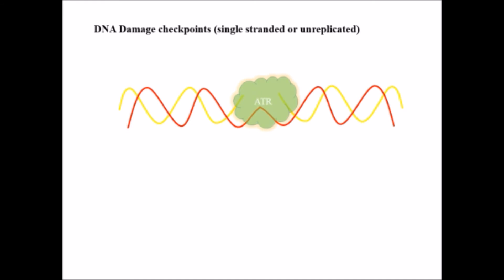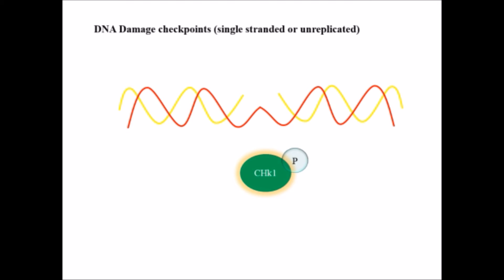When there is single-stranded or unreplicated DNA, instead of ATM, ATR is activated. This time, instead of CHK2, ATR activates CHK1 by phosphorylating it, and CDC25C — not CDC25A as in the case of double-strand break — is targeted. This leads to arrest at the S and G2 phases.